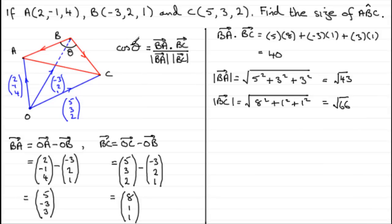So we're now in a position to work out what cosine θ is. Therefore, we've got that cos θ equals BA dotted with BC, which we've seen is 40, divided by the magnitude of BA, which is the root of 43, times the magnitude of BC, which is root 66. Work that out on your calculator and you'll find that you get 0.7508 and so on.